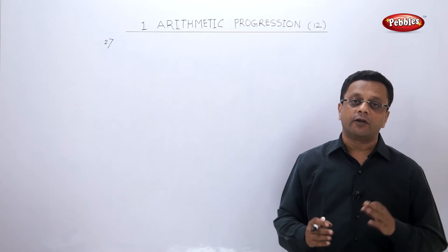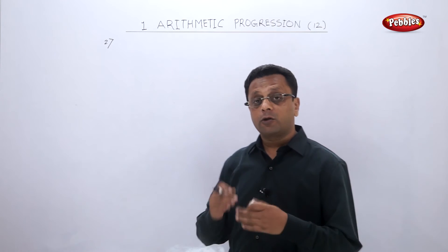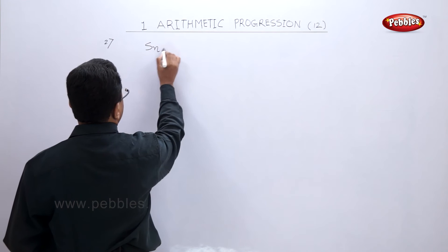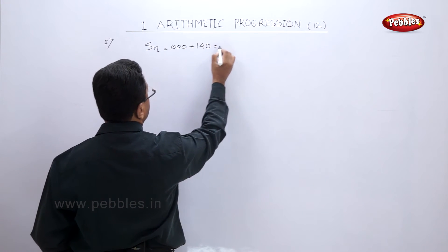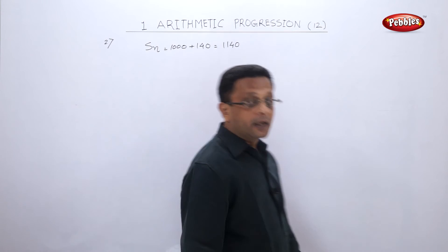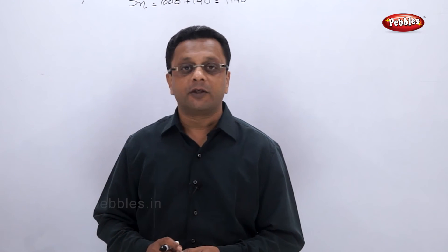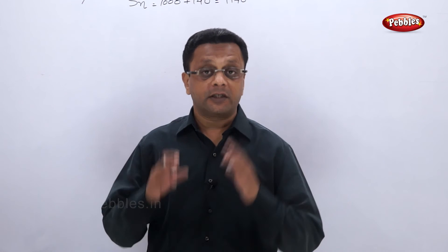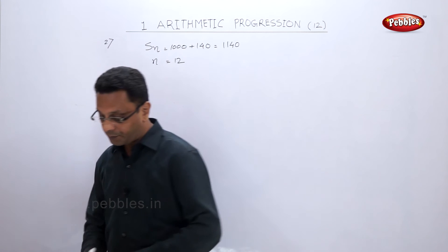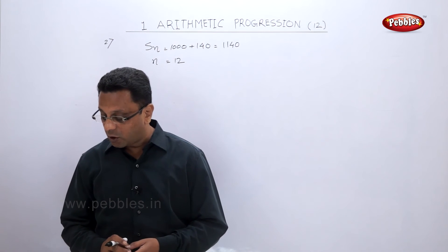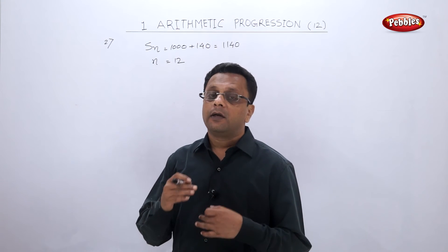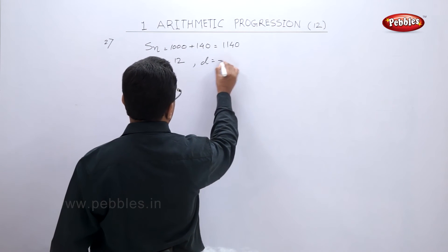Let us see the second example. A farmer borrows rupees 1000 and agrees to repay with a total interest of rupees 140 in 12 installments. The total amount repaid is 1000 + 140 = 1140 rupees, so SN = 1140. Number of installments n = 12. Each installment is less than the preceding one by rupees 10, so d = −10.